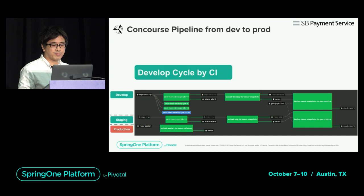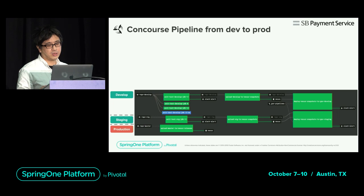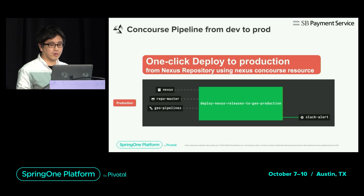Next, I will explain the flow from staging to production release. Deploy to the Nexus release repository by merging into the master branch at release time. After that, after approval of the business team, platform team, and app team, it is possible to perform a zero-downtime release to the production environment simply by clicking this job. In the job, we are running a script that does blue-green deploy.